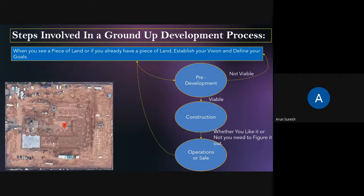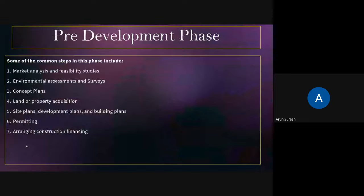Once you start construction on a project, whether we like it or not, we cannot back off at that point. You need to figure out how to either operate or sell the project. Now let's get into what encompasses the pre-development phase. There are seven steps: market analysis, feasibility studies, environmental impacts and surveys, concept plans, acquiring the piece of land, getting a detailed set of plans for bidding and securing permits, and then arranging financing for the project.